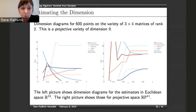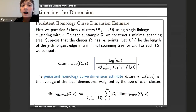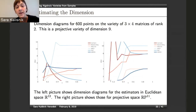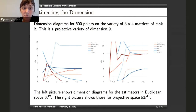I want to point out that with these estimates, when we do single linkage clustering we need the distance in the ambient space. Depending on whether our variety lives in projective space or Euclidean space, we have two metrics to choose from: the standard Euclidean distance in Euclidean space, and Fubini-Study in projective space. We implemented both.